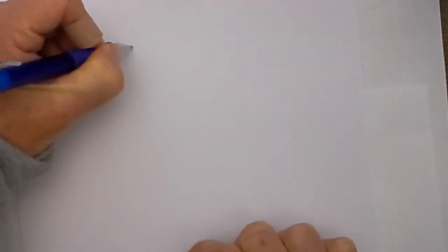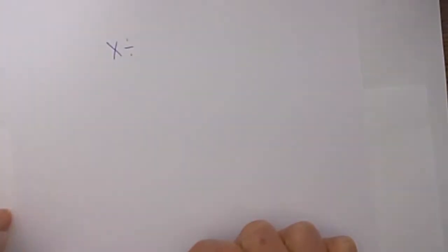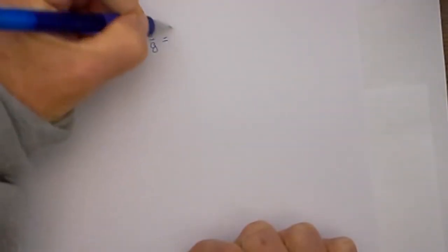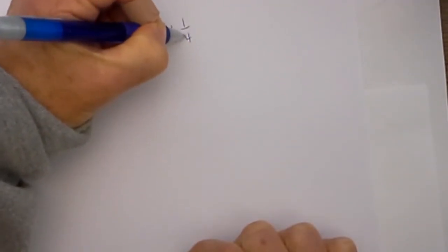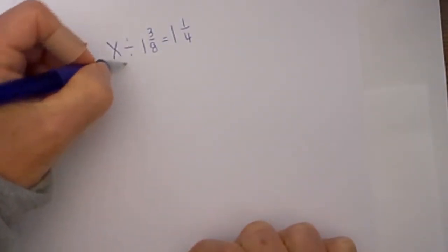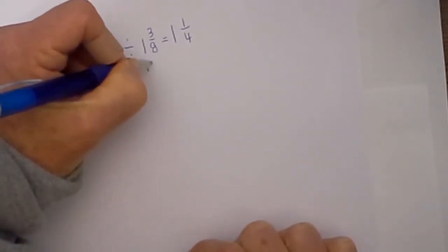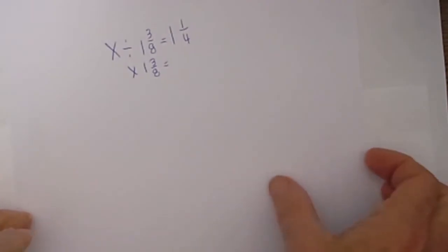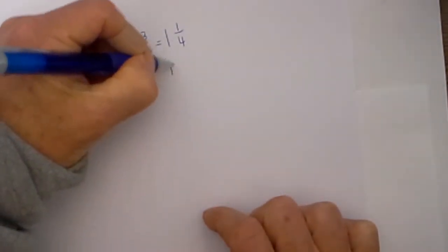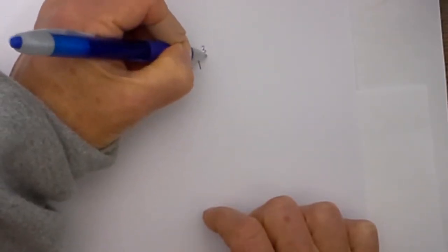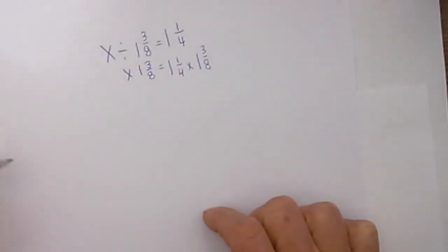We have x divided by 1 and 3/8 is equal to 1 and 1/4. So we need to get x by itself. In order to do that we need to multiply by 1 and 3/8. So that is 1 and 3/8 equals 1 and 1/4 times 1 and 3/8. So now these will cancel.